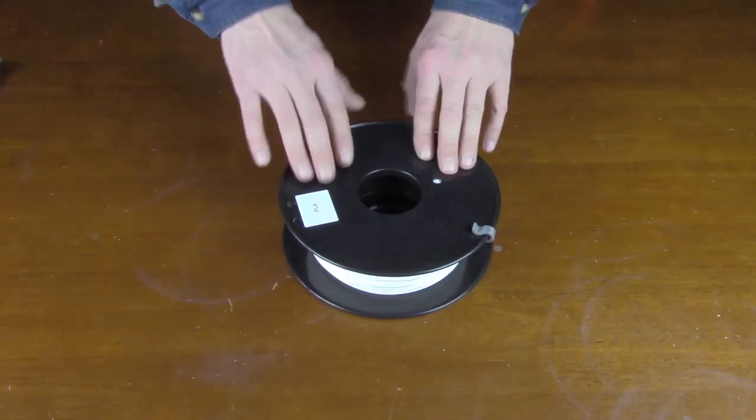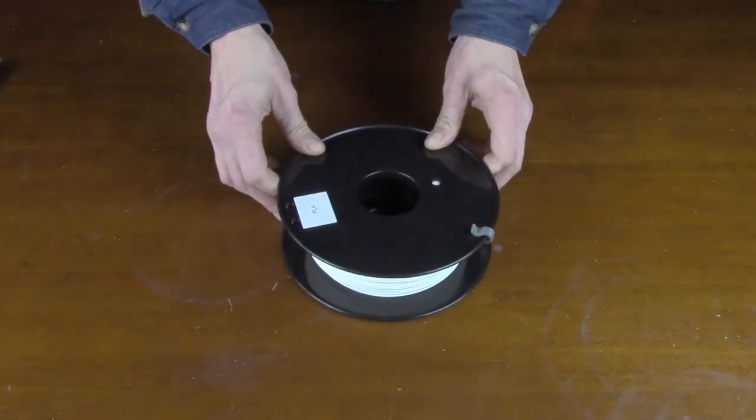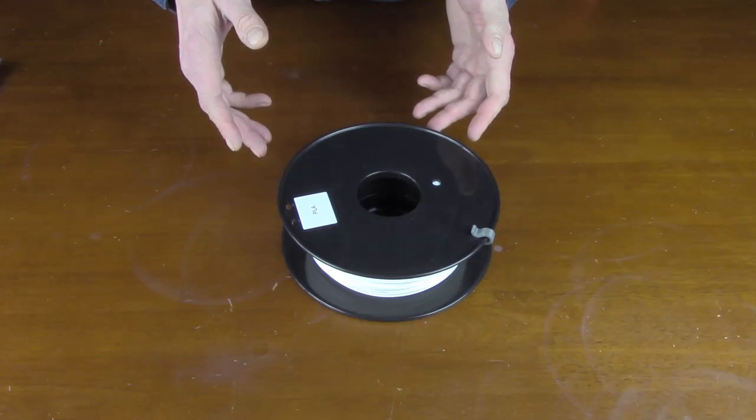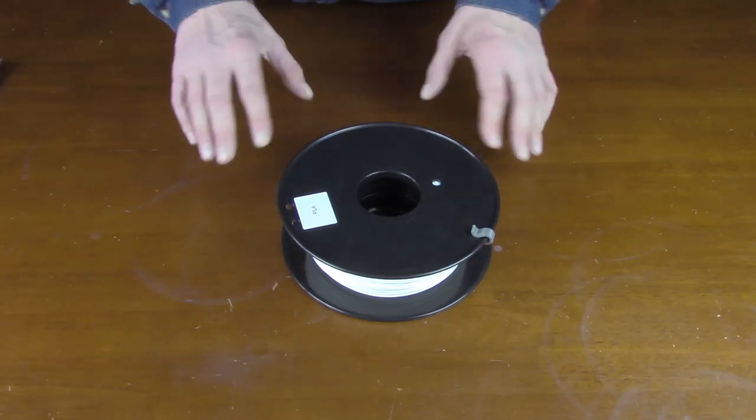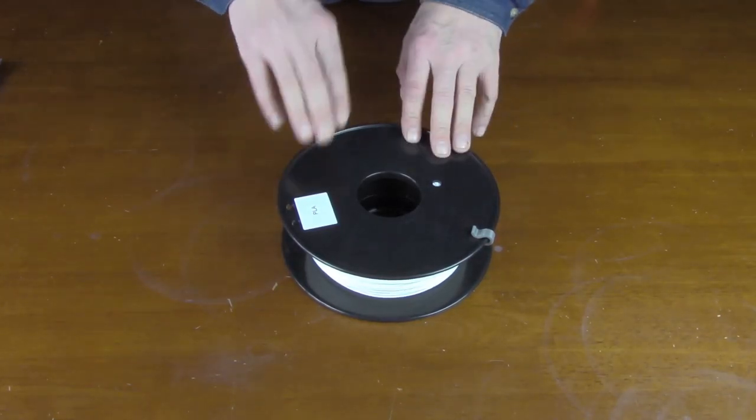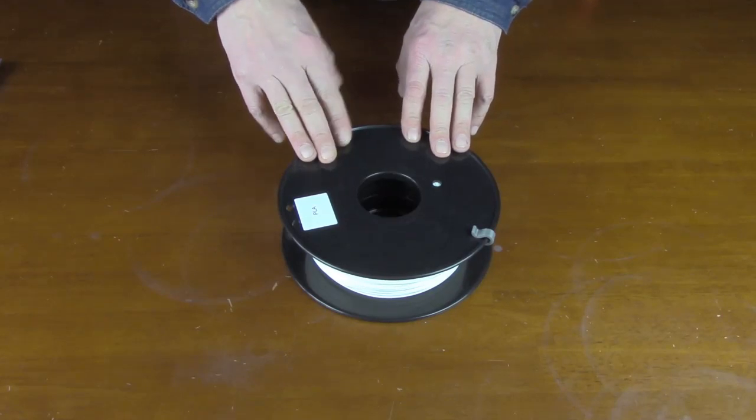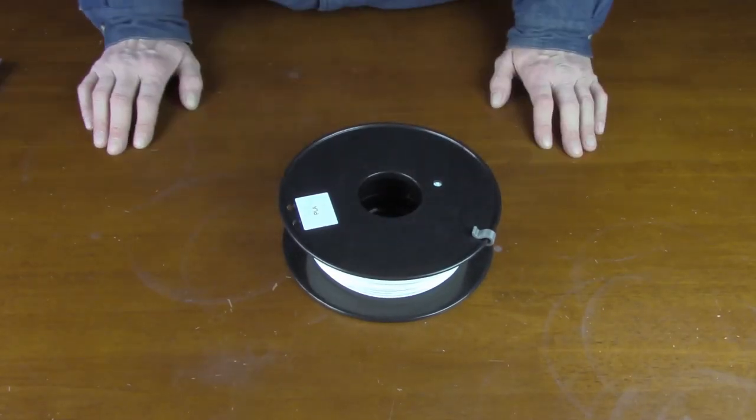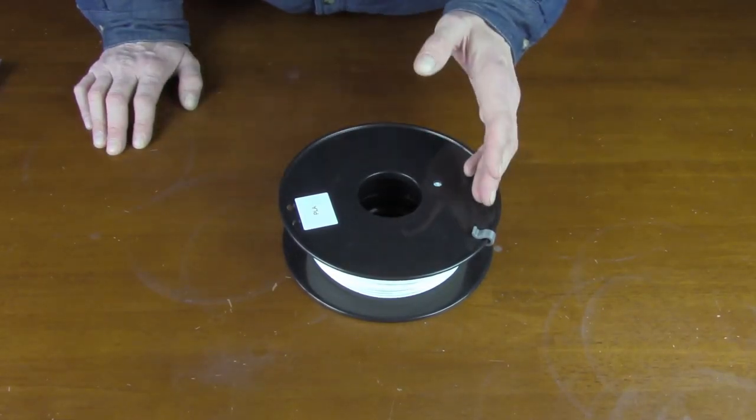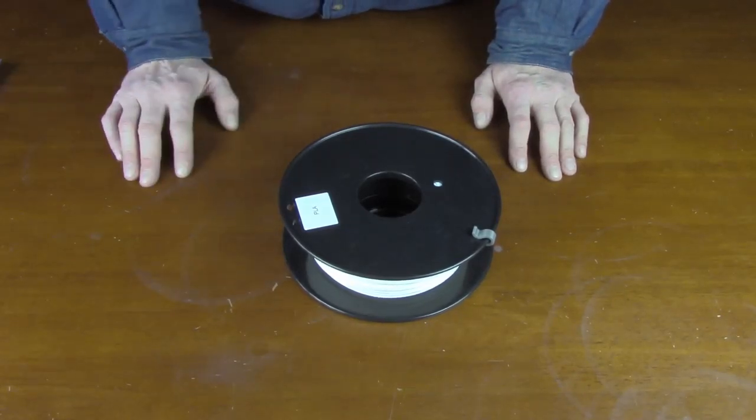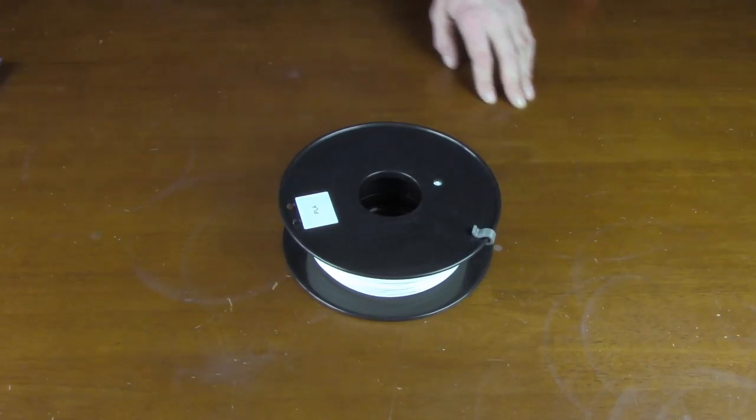Now when you first get your filament, generally it's in a vacuum sealed bag and on rare occasion they have Ziploc bags, but if you buy the more inexpensive brands, generally not, so you cannot reseal them. So instead of buying a vacuum machine, there is a much cheaper and easier way to do this.